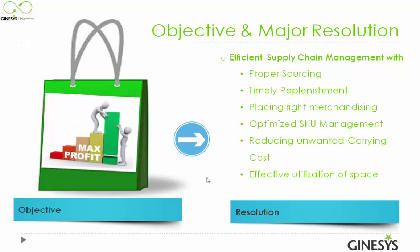Efficient supply chain management also involves placing the right merchandising, optimizing SKU management, reducing unwanted carrying costs, and effective utilization. These are the factors which need to be addressed, and only then can we achieve efficient supply chain management.